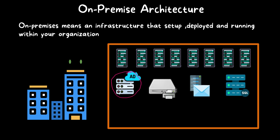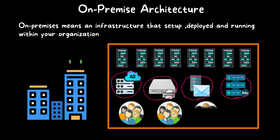Here you can see an AD server which contains all the Active Directory objects of the organization, a print server used to authenticate users for printing, an Exchange server used for email communication, and a SQL server used to store the database. All of these resources are shared within the users of that organization, meaning only users inside the organization can access these services. People from outside cannot access the services unless published via the public internet or a VPN.